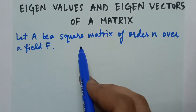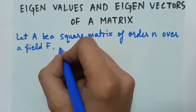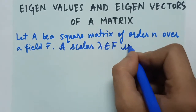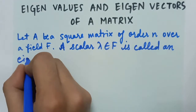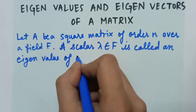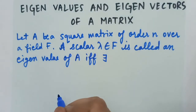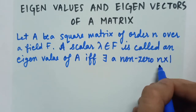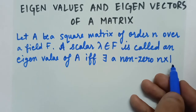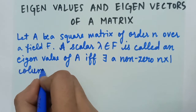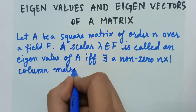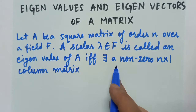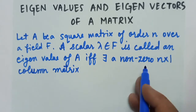Let A be a square matrix of order N over a field F. A scalar lambda which belongs to the field F will be called an eigenvalue of matrix A if there exists a non-zero N cross 1 column matrix.